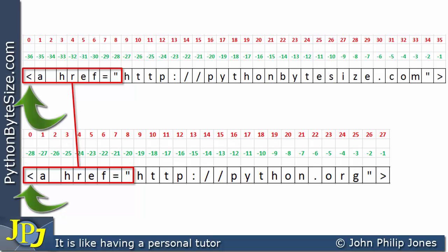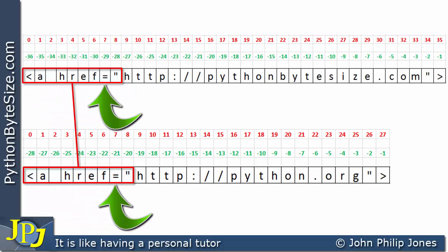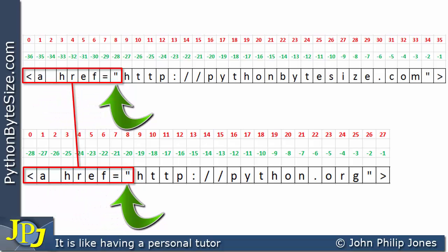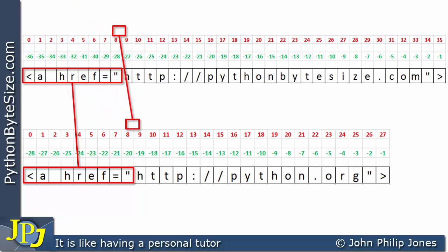The beginning is a less-than sign, followed by 'a', a space, then 'href', then an equal sign, and then a double quote. And then we can see that index position 9 in both of them is where the 'h' is. So for both strings we can take the start value at index position 9 because we know the frontage of both of them is the same.